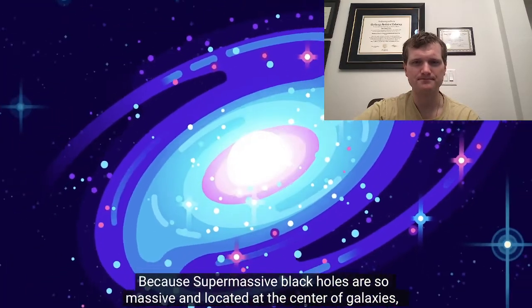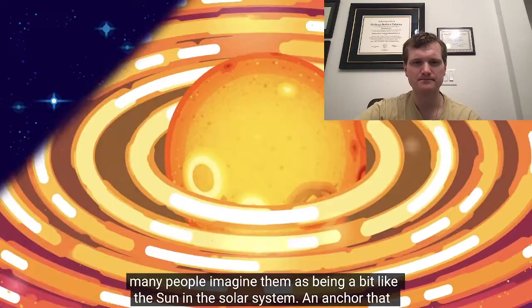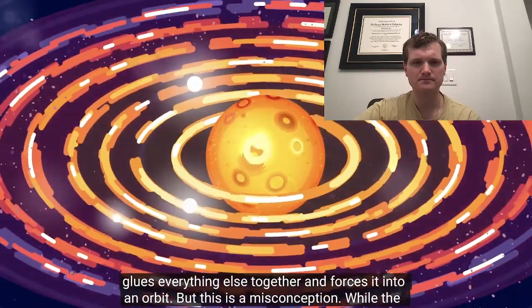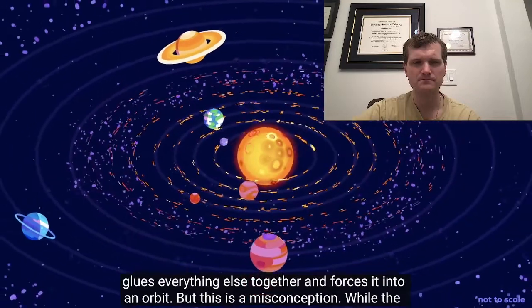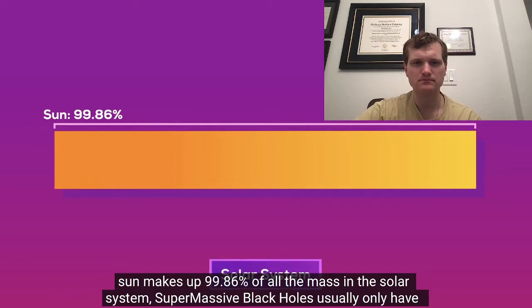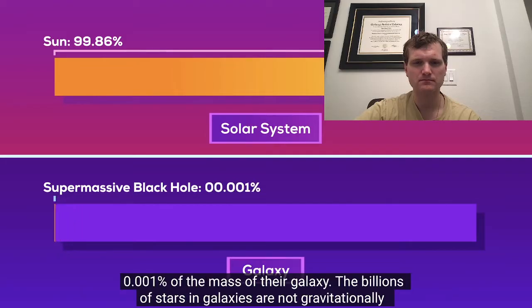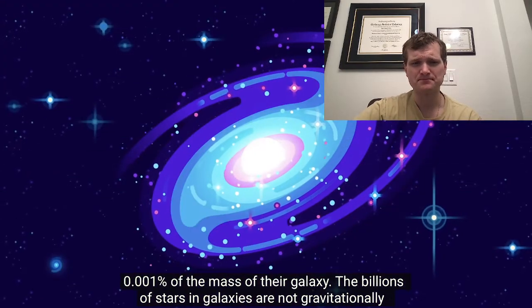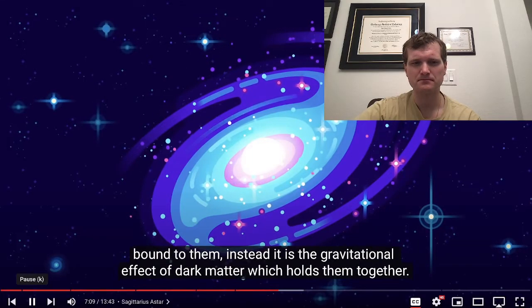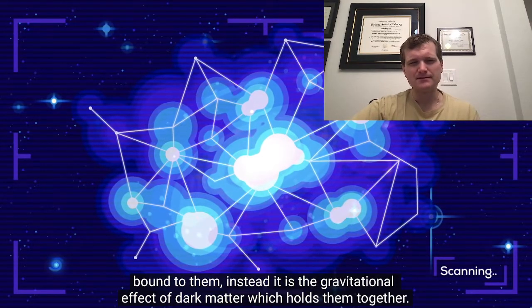Because supermassive black holes are so massive and located at the center of galaxies, many people imagine them as being a bit like the sun in the solar system, an anchor that glues everything else together and forces it into an orbit. But this is a misconception. While the sun makes up 99.86% of all the mass in the solar system, supermassive black holes usually only have 0.001% of the mass of their galaxy. The billions of stars in galaxies are not gravitationally bound to them. Instead, it's the gravitational effect of dark matter which holds them together. Yeah, that's true because it's on the order of billions to trillions of stars, so it would have to be like trillions of solar masses.